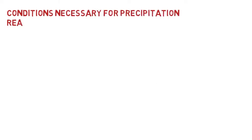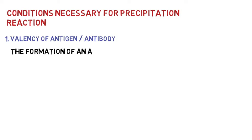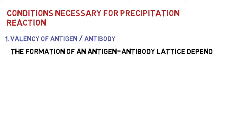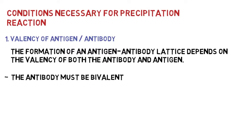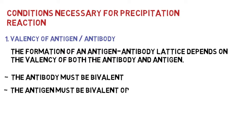Let's have a look at the conditions necessary for precipitation reaction. The formation of the antigen-antibody lattice depends on the valency of both antigen and antibody. Antibody must be bivalent, meaning it must have two antigen-binding sites. A precipitate will not form with a monovalent Fab fragment. Antigen must be bivalent or polyvalent — it must have at least two copies of the same epitope, or different epitopes that react with different antibodies in a polyclonal sera.